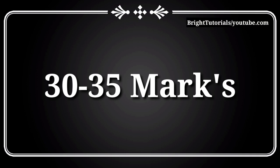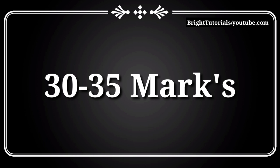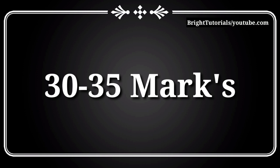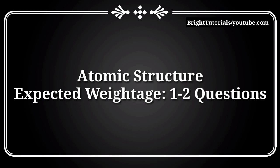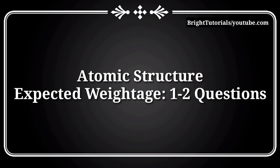For scoring 30 to 35 marks in MSET chemistry you should follow the procedure I am going to tell you in this video, and I will also be discussing some of the key topics in all chapters. First of all, start with the chapter Atomic Structure, because this chapter contains one to two bits weightage in MSET 2021. Important topics include Bohr's hydrogen atomic model, quantum numbers, Heisenberg's uncertainty principle, and theory questions.